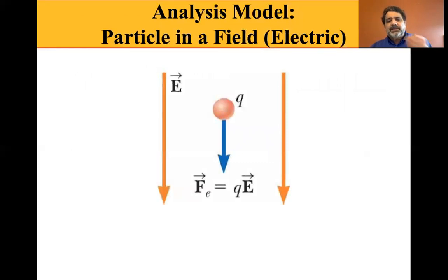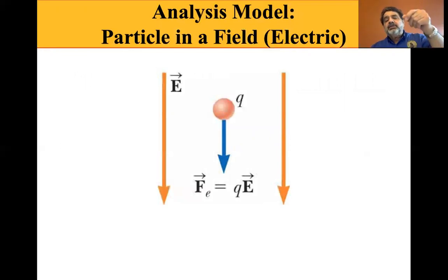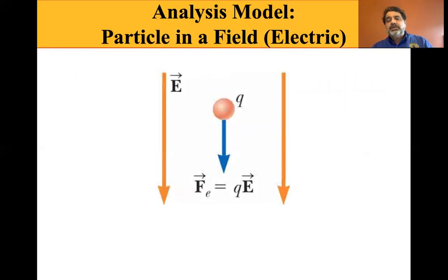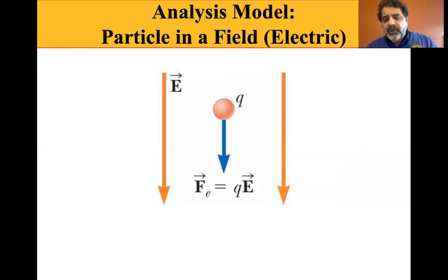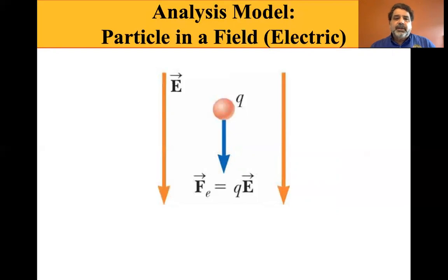Particle in the field: here you can see a positive particle with the field headed downward — the particle is being repelled by the electric field. The electric force is F = qE, where q is the charge in coulombs and E is in newtons per coulomb. The coulombs cancel, leaving newtons — which is a force, the electric force.